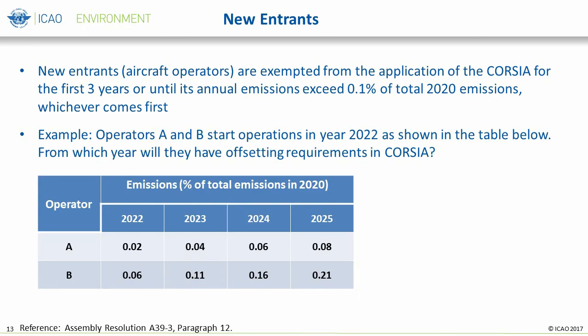A simple example is shown in the table. In the case of Operator A, which starts its operations in 2022, emissions do not go beyond 0.1% for three years until 2024; therefore, it will start its offsetting requirements from the subsequent year in 2025. Operator B, on the other hand, goes above the 0.1% threshold in 2023 and therefore starts its offsetting requirements in 2024. One common misunderstanding is the reference to total emissions in 2020, which represents the total emissions of the international aviation sector as calculated for the year 2020, regardless of the routes covered or not by CORSIA.